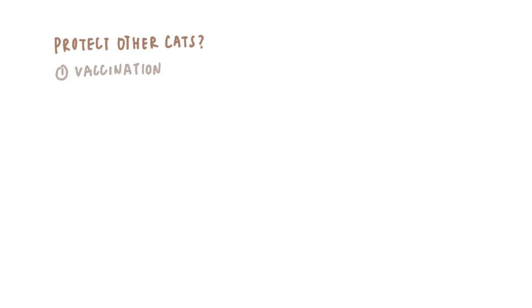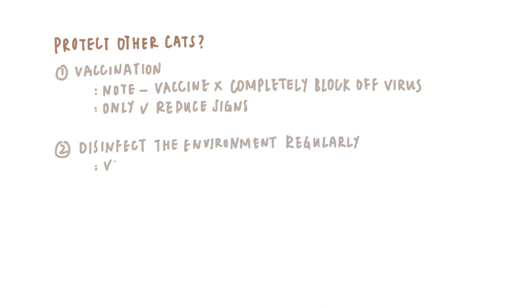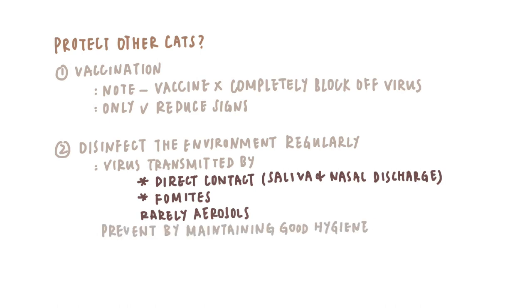How to protect other cats from the cat with the virus? First, vaccinate your cat against the virus. However, keep in mind that the vaccine cannot completely block off the virus — it can only reduce the signs when infection does occur. Second, disinfect the environment regularly. It is known that the virus can be easily transmitted by direct contact and fomites, but rarely by aerosols. So the best way to prevent one cat from infecting another is to maintain good hygiene among the cats.